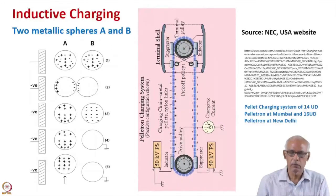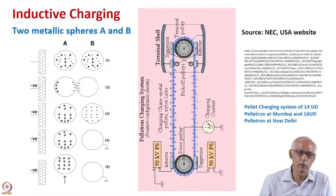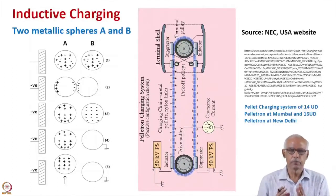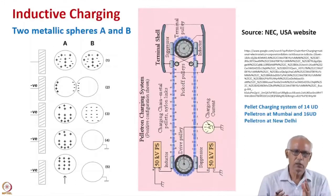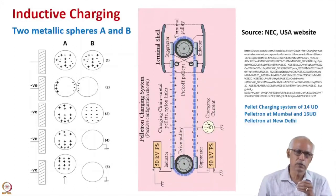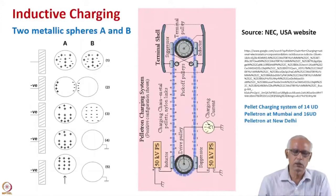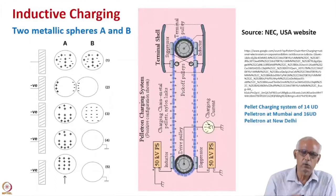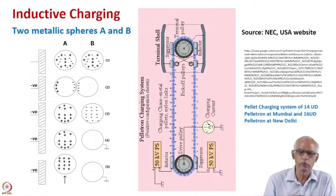In the Pelotron Accelerators, there is no contact of high voltage with the charging systems. There is a pellet chain which consists of metallic pellets connected by nylon insulators. To understand the principle of inductive charging, suppose there are two metallic spheres A and B. As they are metallic, positive and negative charges are present on both of them, and they are neutral basically.